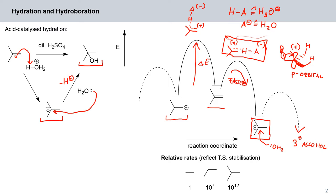The relative rates reflect the transition state stabilization. The more substituents you have on the positive charge being generated during acid-catalyzed hydration, the more stable the resulting carbocation will be, and the faster this reaction proceeds.